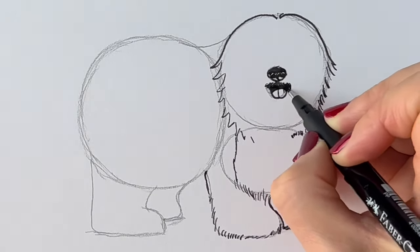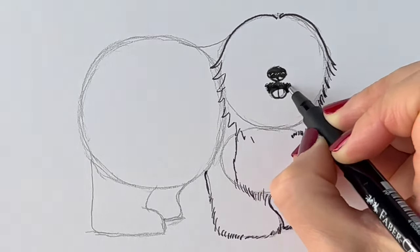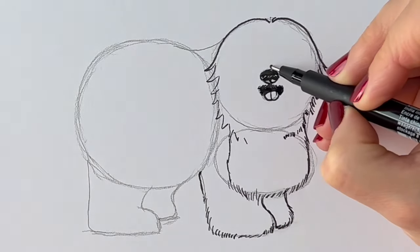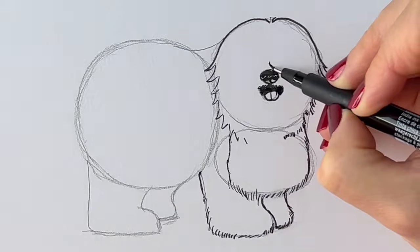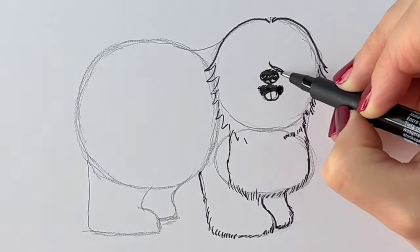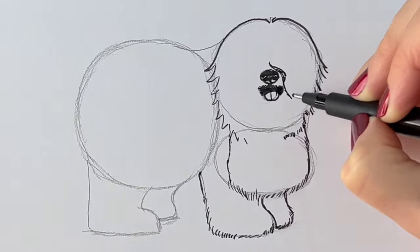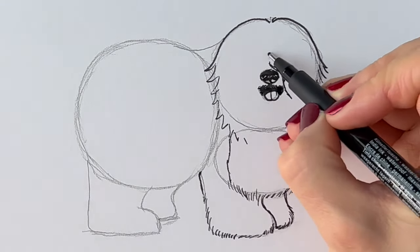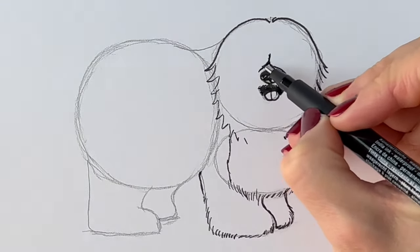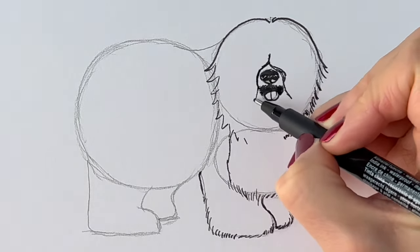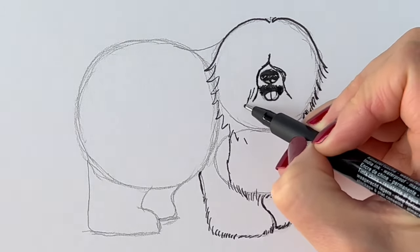Add a bit more fur around the mouth. Just like that. Now it's got so much fur that you can't actually see the eyes. So we're just going to show that the fur is coming over the eyes. Just here. Just like that. And then the same on the other side. Just like that.